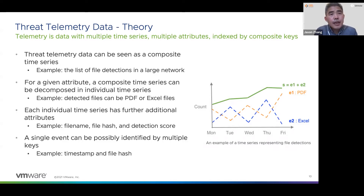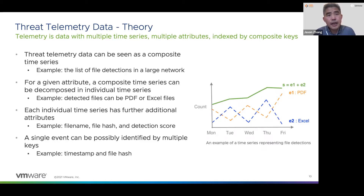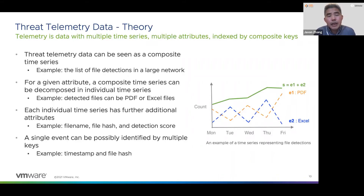Threat telemetry data can be seen as a composite time series. For a given attribute or dimension, such as a file type, the composite time series can be decomposed into individual time series. For example, a file detection composite time series could contain two individual time series such as PDF and Excel time series. Even if there are some peaks from individual time series, the actual combined composite time series does not really show any clear peaks. Each individual time series has many events with additional attributes like file name, file hash, and detection score, and every single event can be uniquely identified by multiple attributes or keys.